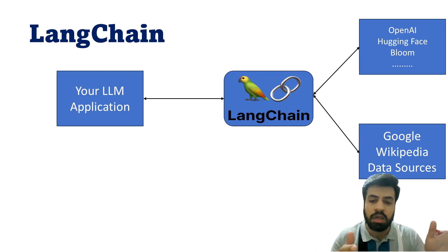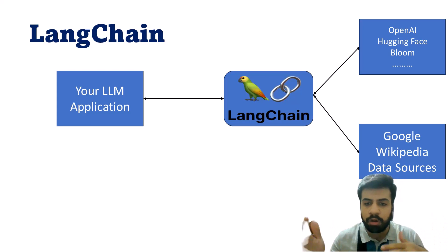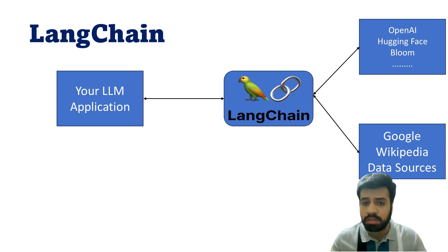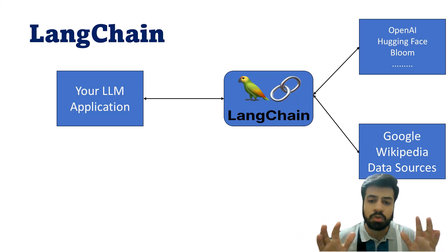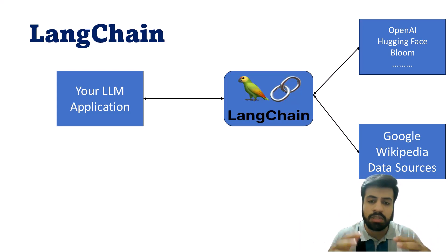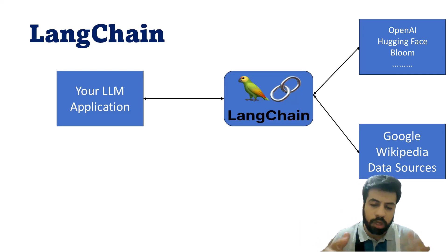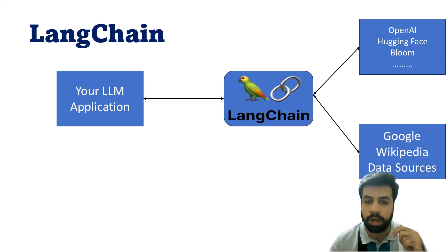Using LangChain you can also integrate your custom APIs and private data sources. So LangChain is a complete framework where you can use OpenAI models, HuggingFace models, and other models, plus get real-time information from Google, Wikipedia, and your own data sources — things that GPT-3.5 and GPT-4 alone do not allow.